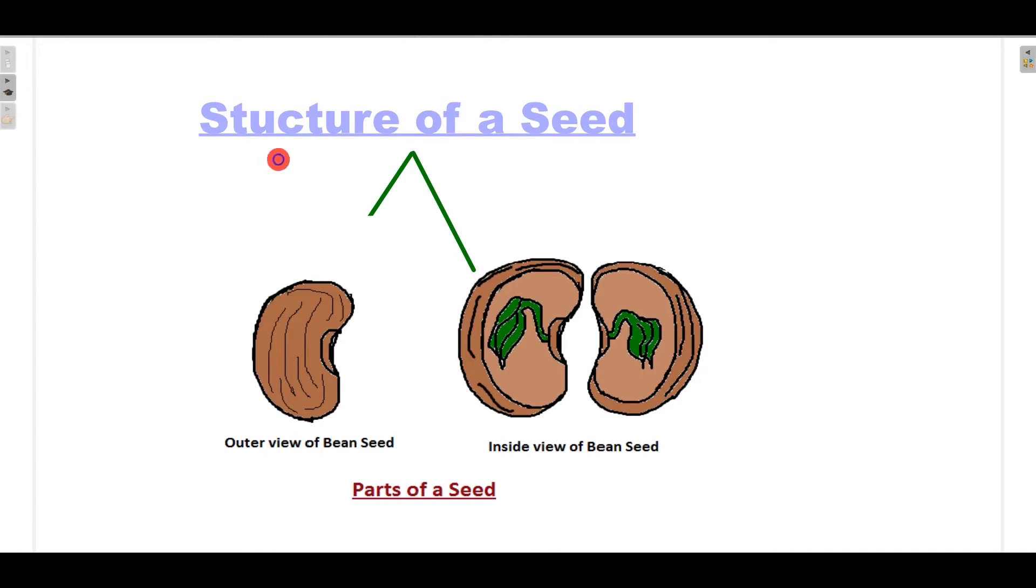First, let me explain the structure of a seed. Here a seed is shown in two forms: first is the outer view of a bean seed, and second is the embryo of a bean seed.